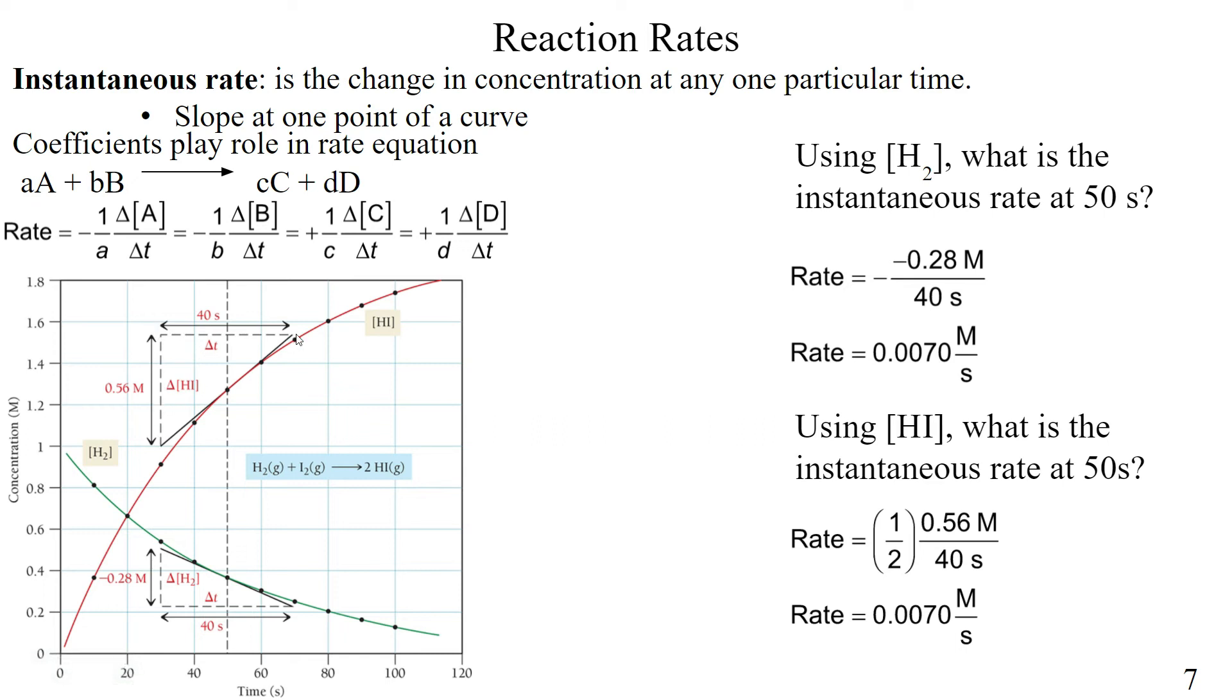Now the change in concentration, we're just going to take that point minus this point here. In this case, it's going to give me 0.56 molar. You guys might get something a little bit different depending on where you estimate that is. I got 0.56 in this case, 0.5 or 0.6 if you want to just round it out.